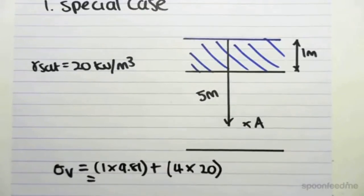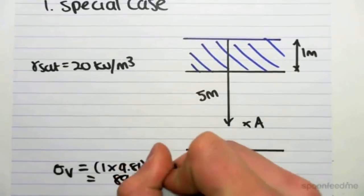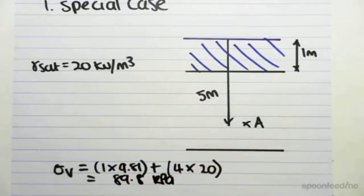So if we work this out, it's going to be 9.81 plus 4 times 20. We get 89.8 kPa.